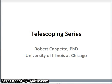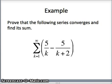This is Bob Capetta from the University of Illinois at Chicago and this discussion is on telescoping series. Our goal is to prove that the following series converges and we want to find its sum. What does it mean for a series to converge? Our definition is that a series converges if the partial sums converge. So my goal here is going to be to create a sequence of partial sums and show that the limit as n goes to infinity of those partial sums is some number.